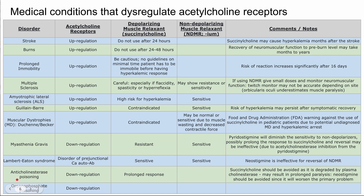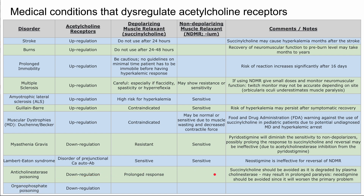In acetylcholinesterase poisoning, you have downregulation of acetylcholine receptors, which results in a prolonged response to succinylcholine, similar to myasthenia gravis. Succinylcholine should be avoided because it's degraded by plasma cholinesterase and can result in prolonged paralysis. Neostigmine should also be avoided since it worsens the anticholinesterase poisoning.